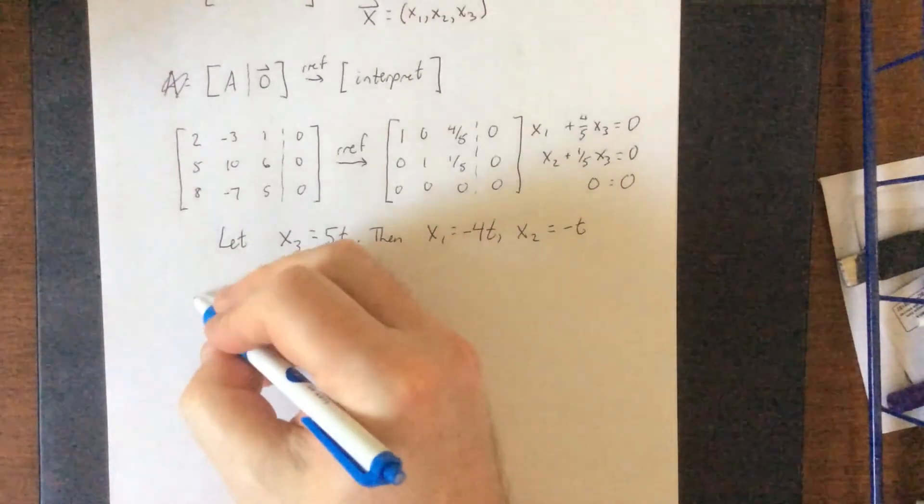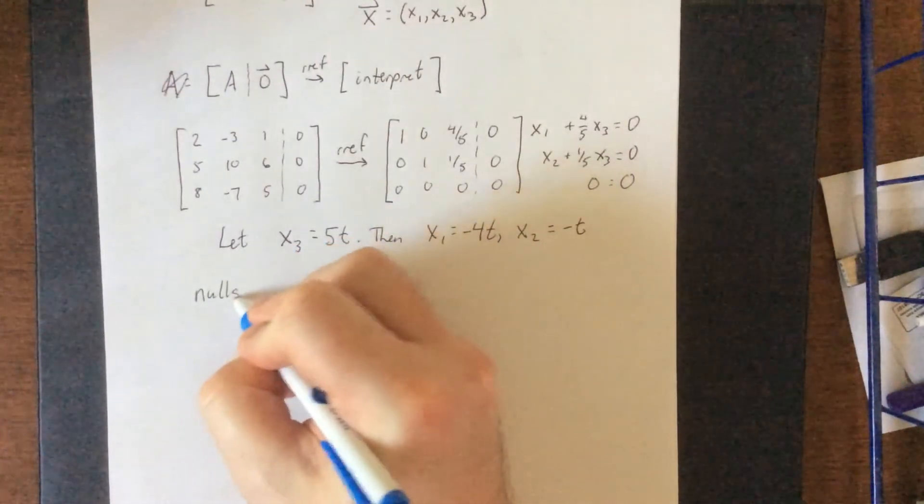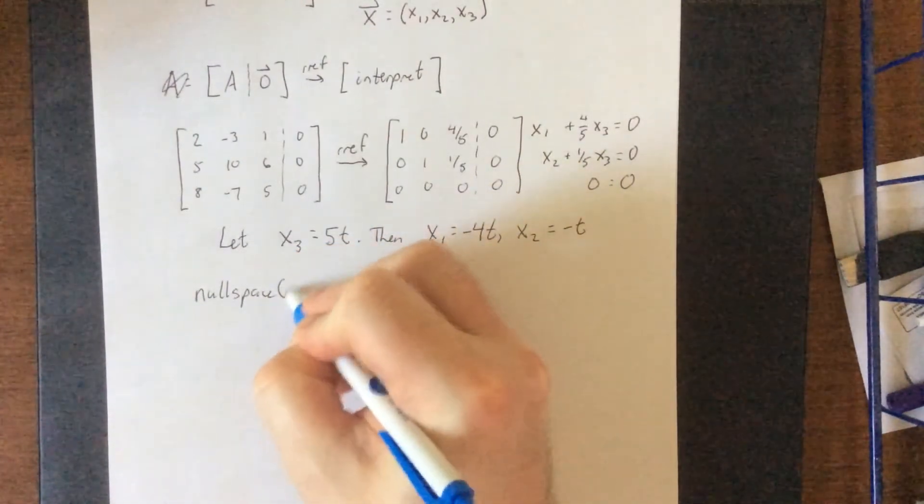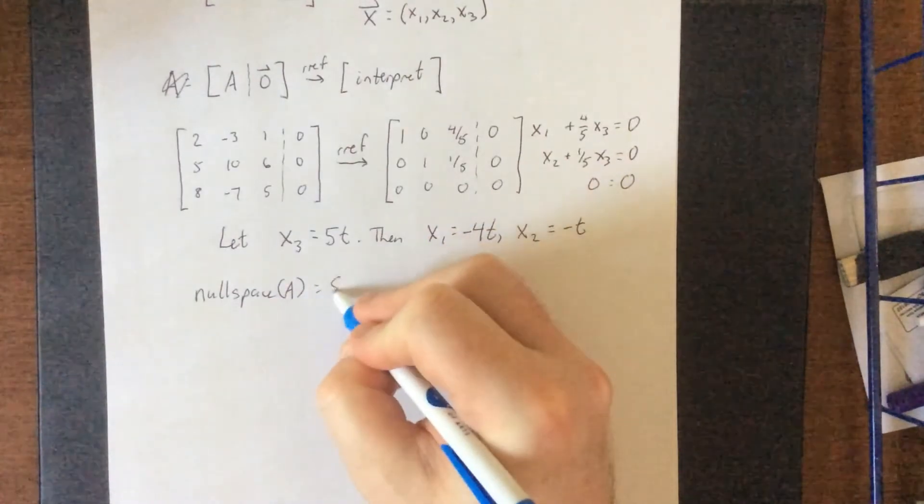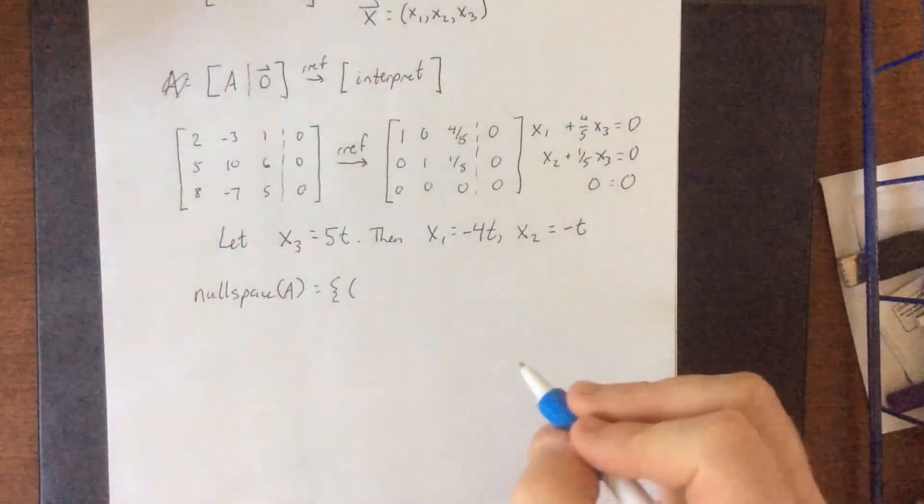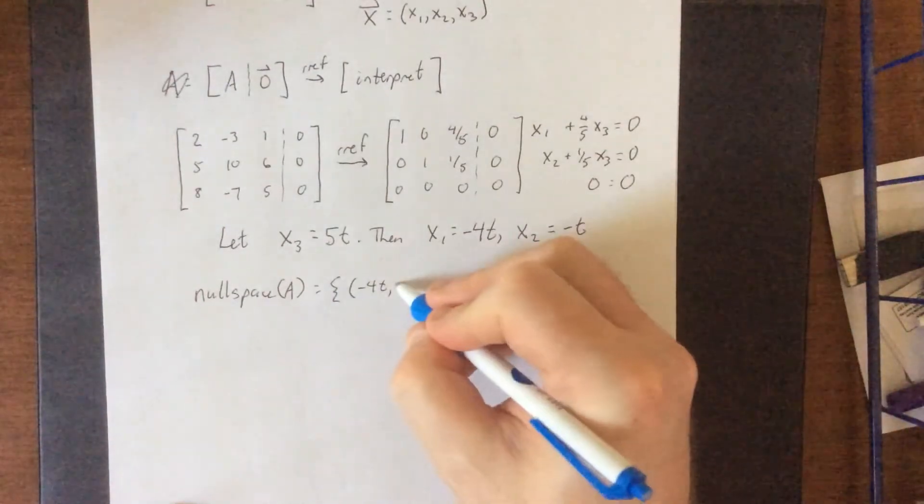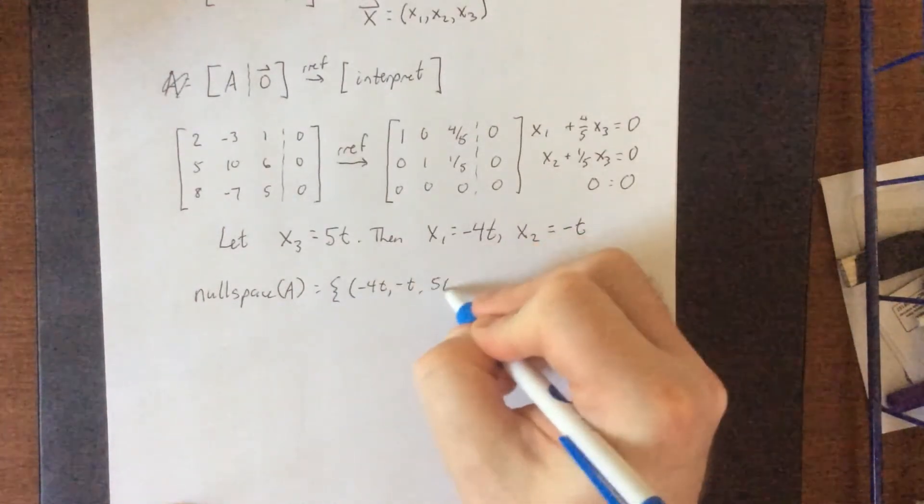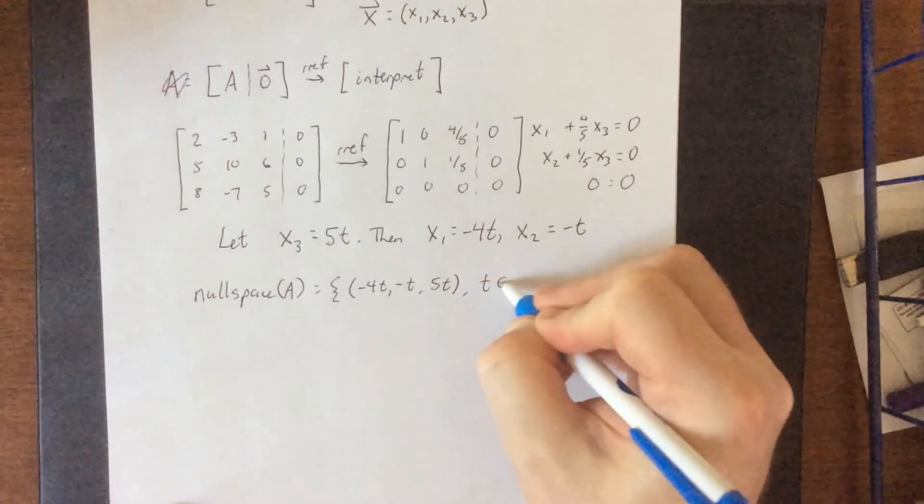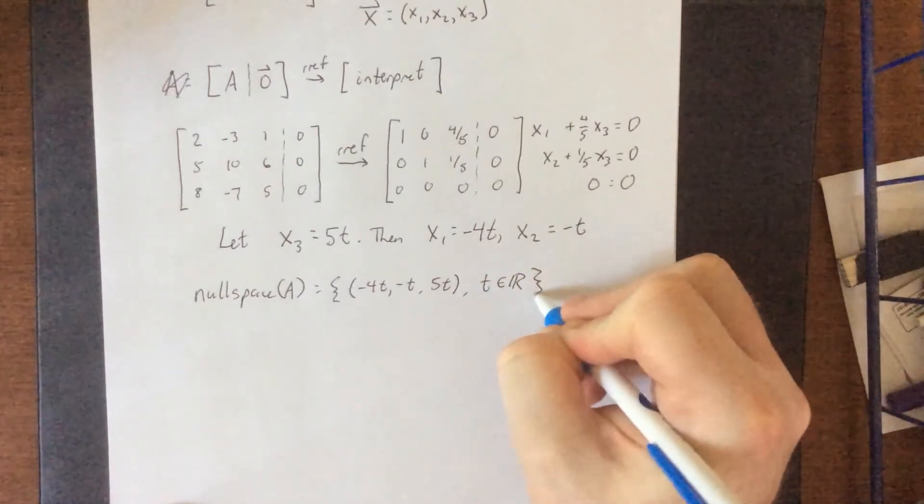Now with that in mind, that means that our null space of a is going to be equal to any vector of the form negative 4t, negative t, 5t. This is where t represents any real number.